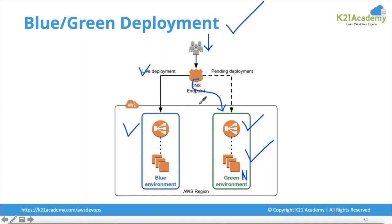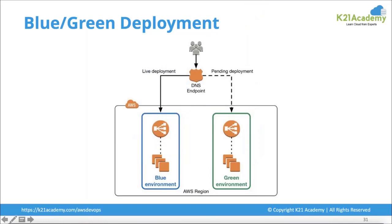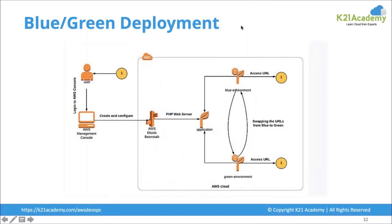In the backend, while the green environment is being created with the new features, all traffic continues going to the blue environment. Once the green environment is ready, traffic switches from blue to green and the customer is not affected. Once all traffic has moved to green, you can delete the blue environment, and all customers are accessing the new features.